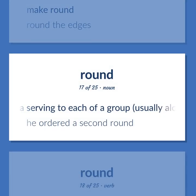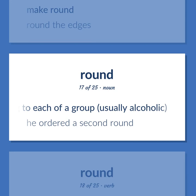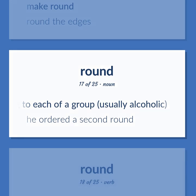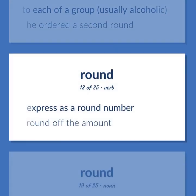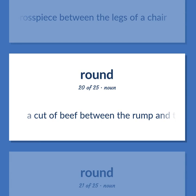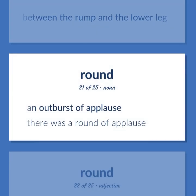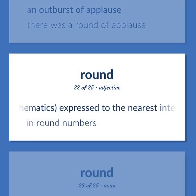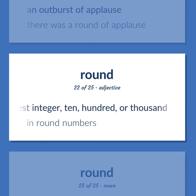A serving to each of a group, usually alcoholic. He ordered a second round. Express as a round number; round off the amount. A crosspiece between the legs of a chair. A cut of beef between the rump and the lower leg. An outburst of applause. There was a round of applause. Mathematics: expressed to the nearest integer — ten, hundred, or thousand. In round numbers.